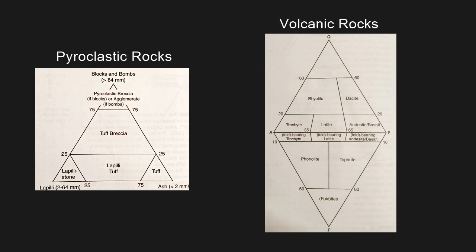Here are two other diagrams commonly used to classify igneous rocks. On the left is a diagram for pyroclastic rocks, and instead of mineralogy, we classify pyroclastic rocks based on clast size. On the right, we have a QAPF diagram for extrusive or volcanic rocks. This works exactly the same way as the other diagram, just for extrusive or volcanic rocks.